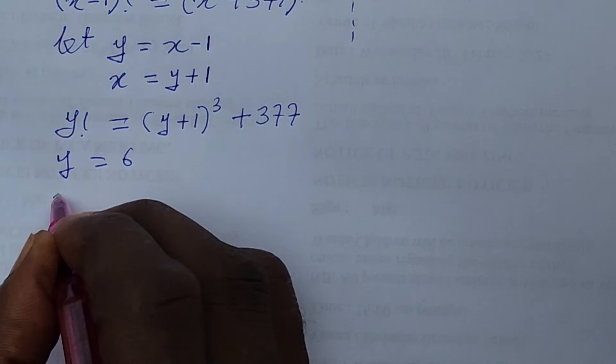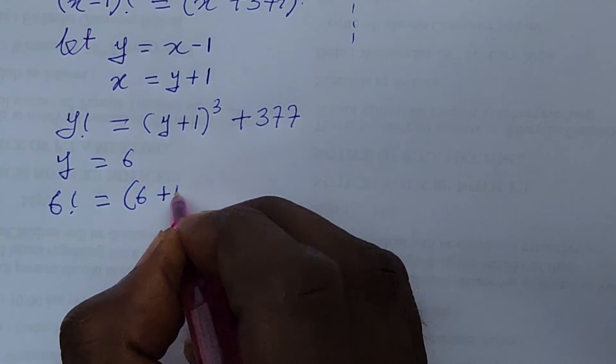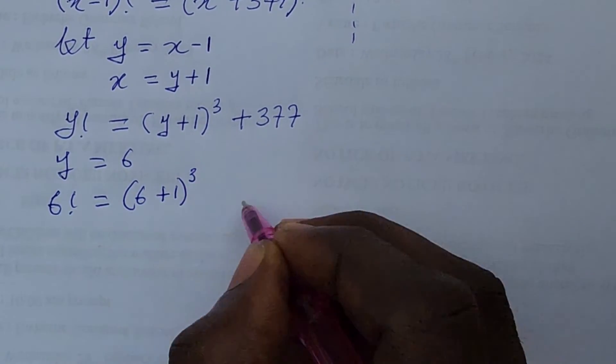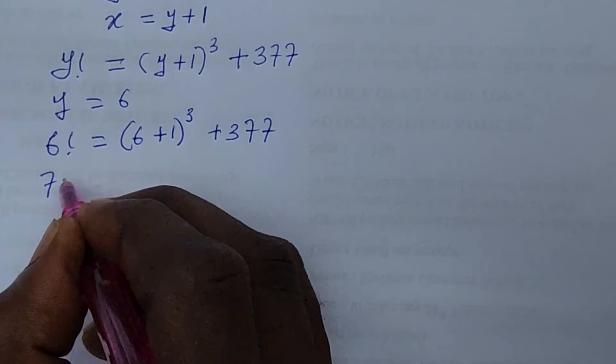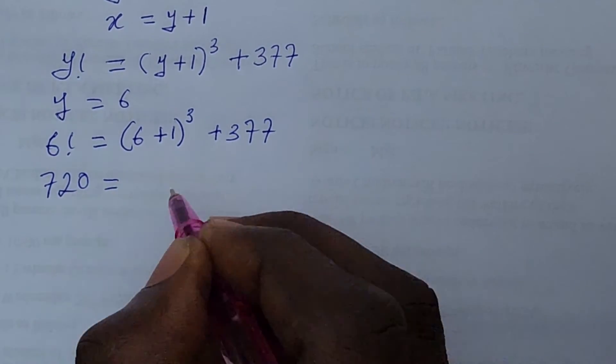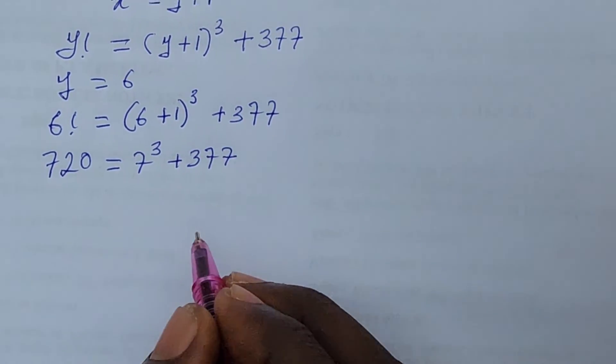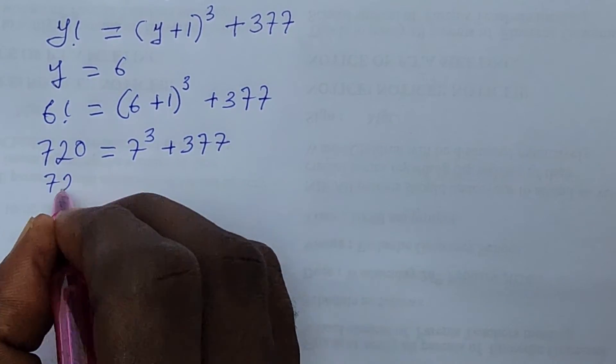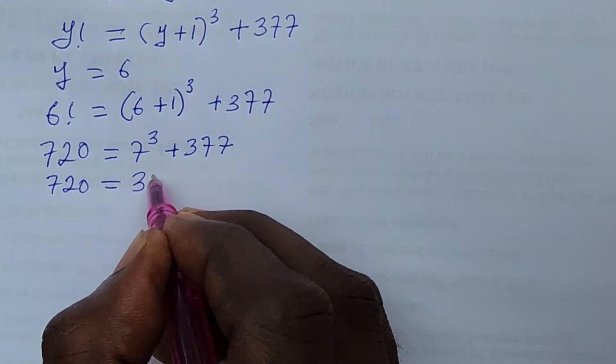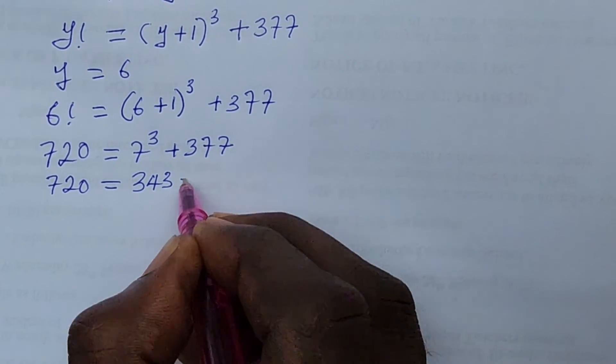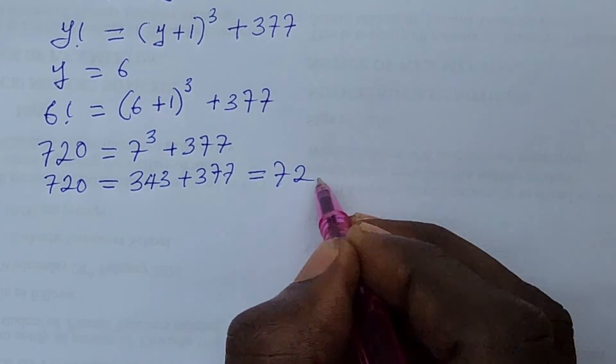So this will now give us here 6 factorial this is equal to your 6 plus 1 to the power of 3 plus 377. Then from here this will give us 720 is equal to your 7 to the power of 3 plus 377. Again this will now give us 720 equal to 7 to the power of 3 will give us 343 plus your 377 which will eventually give us 720.